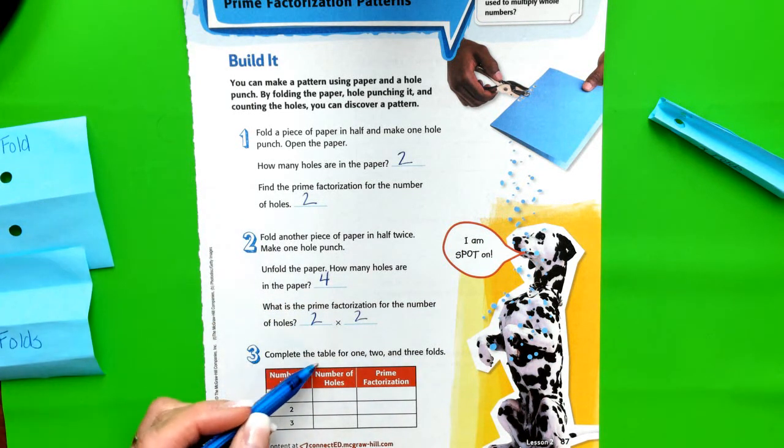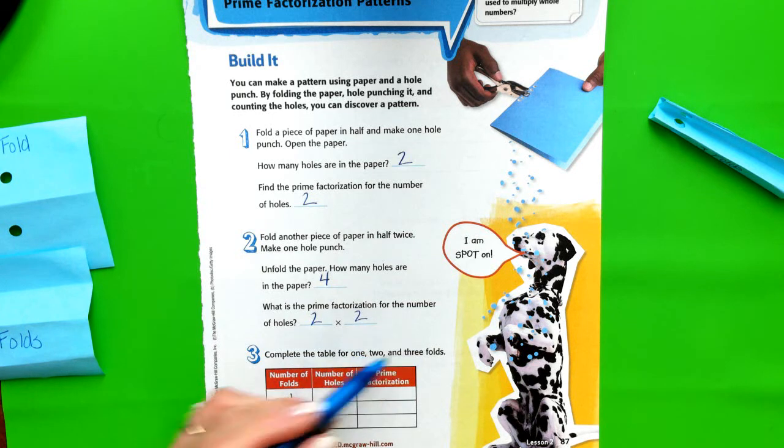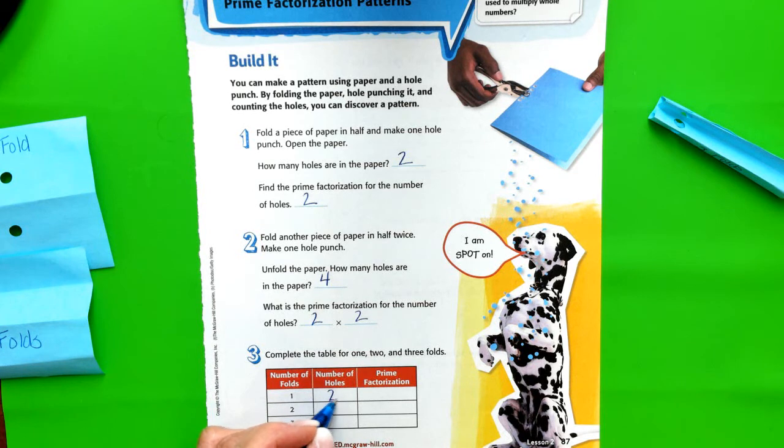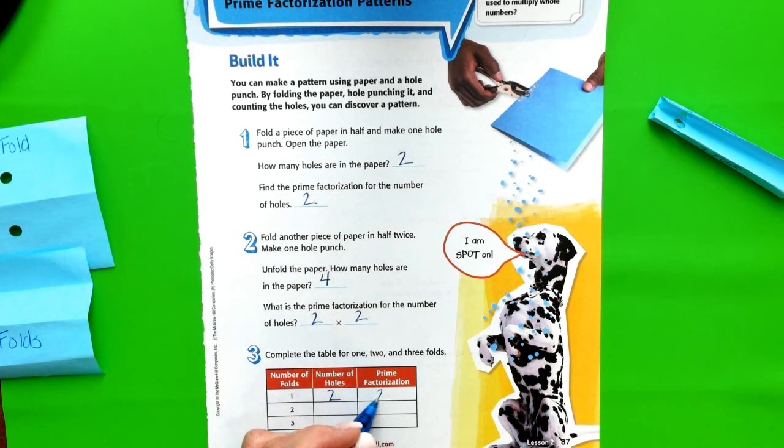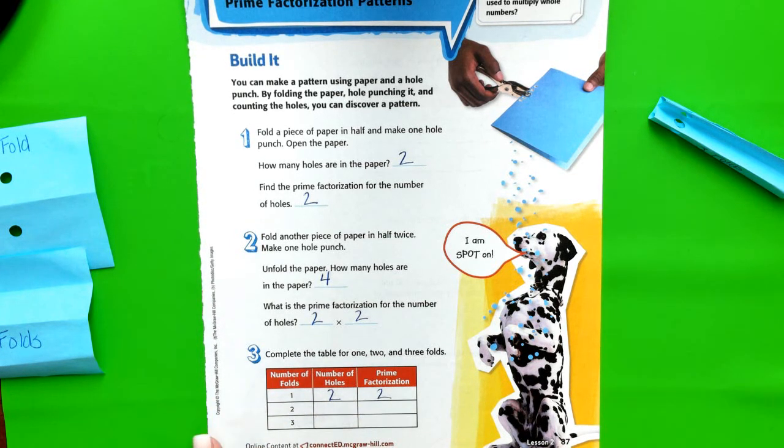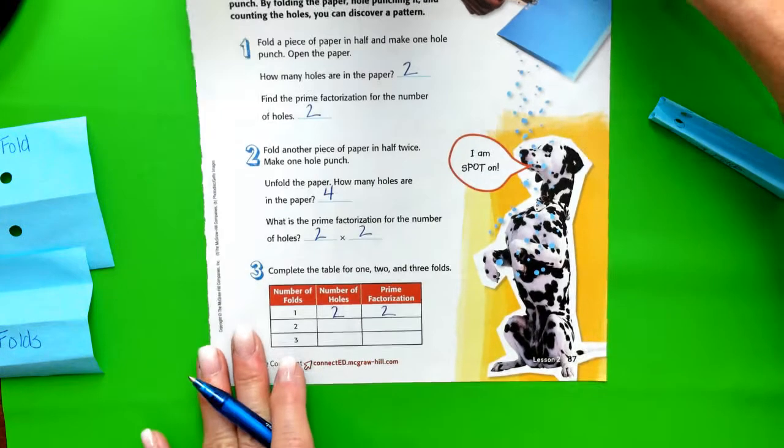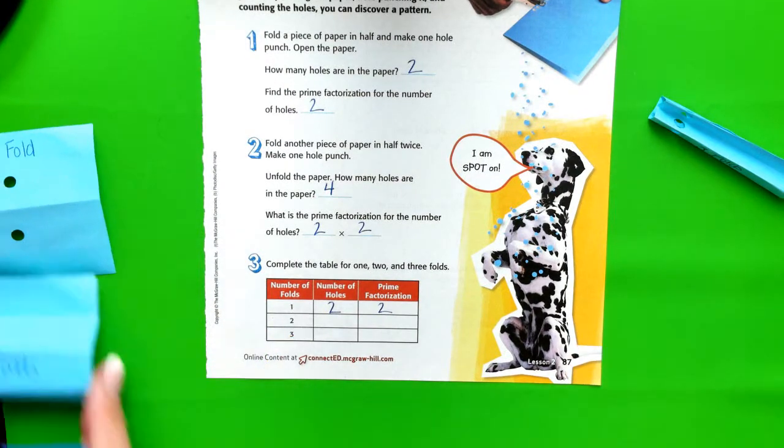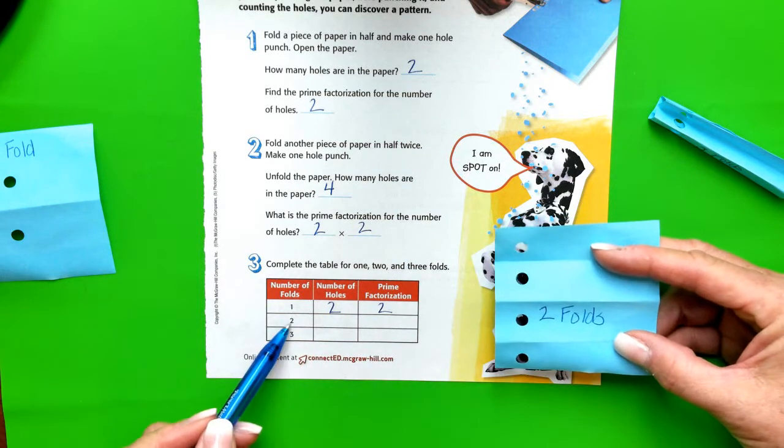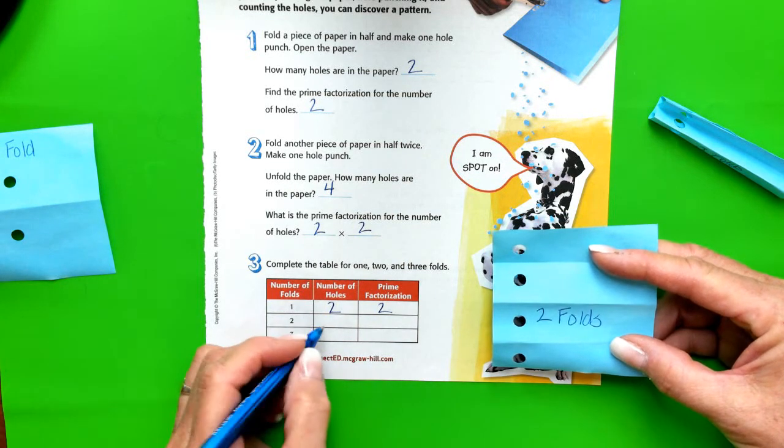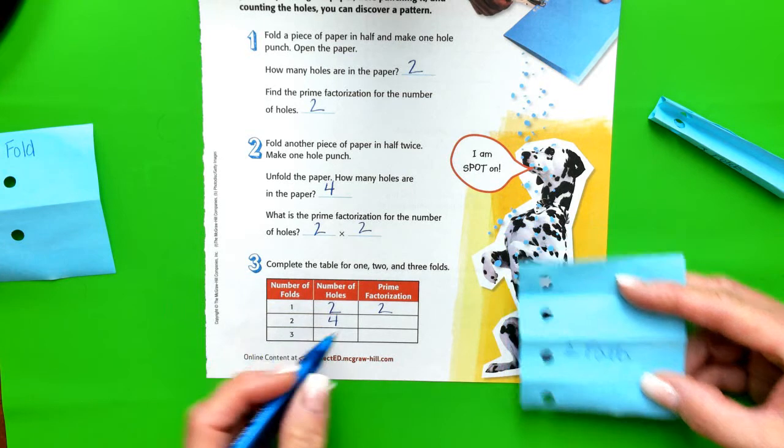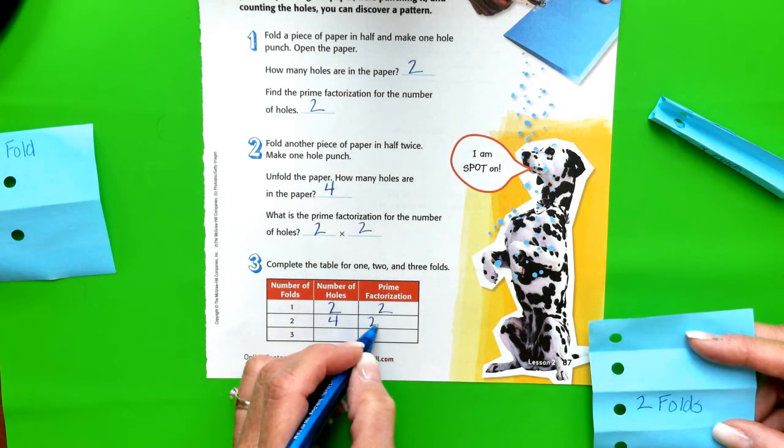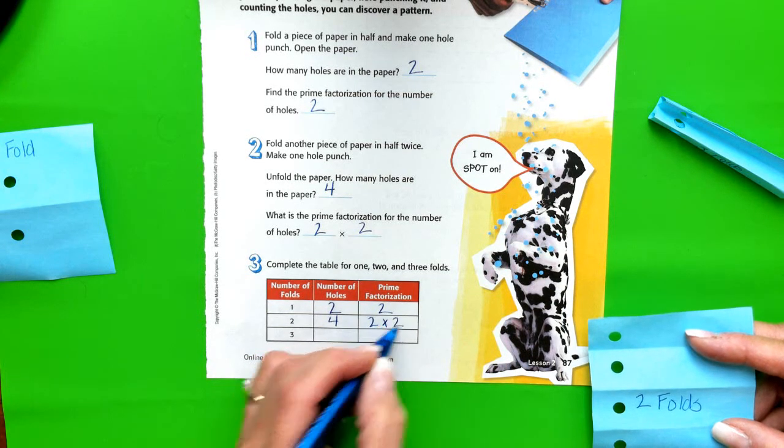Okay, so now we're going to complete the table for one, two, and three folds. So if I folded it once, I got two holes, and we factor that as just a two. It's a prime number. The second time I've folded two folds and I got four holes, and we factor that by saying two times two.